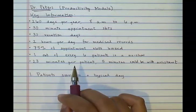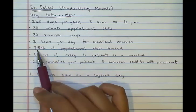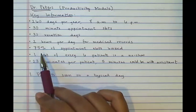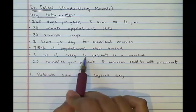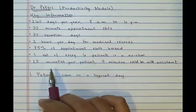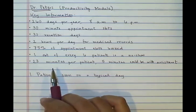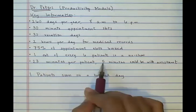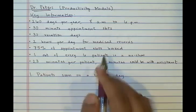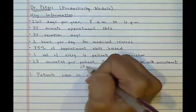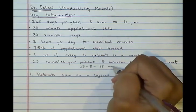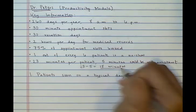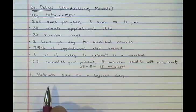We are also told that 75% of Dr. Peters' appointment slots are booked. Out of all of the patients he sees, 1 out of every 6 patients is a no-show. This means that 1 out of every 6 booked appointment slots is wasted. Finally, we are told that Dr. Peters spends 23 minutes with each patient, not the full 30 minutes. However, 5 minutes could be done by an assistant. So that means that 18 minutes — 23 minus 5 — are actually productive for every patient that he sees.